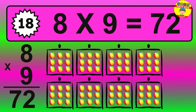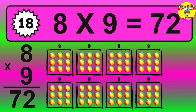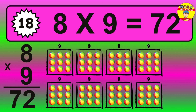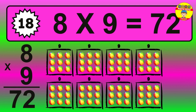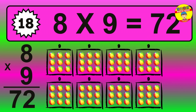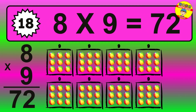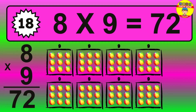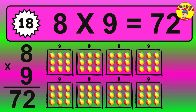Question 18. 8 times 9 equals what? The answer is 8 times 9 is 72. To calculate, we have 8 groups with 9 balls each one. So, how many balls do we have? 72 balls.